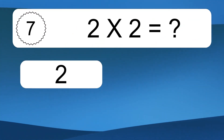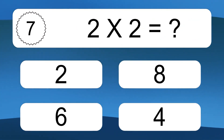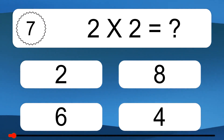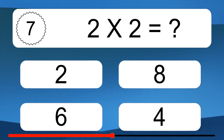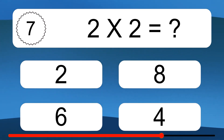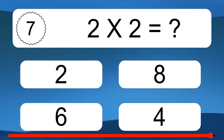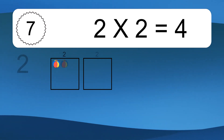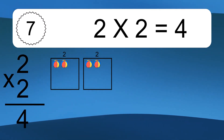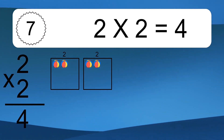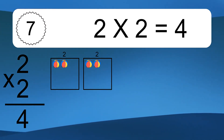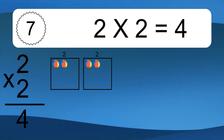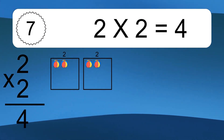2 times 2 equals what? 2 times 2 equals 4. We have 2 boxes, and each box has 2 colorful balls inside.